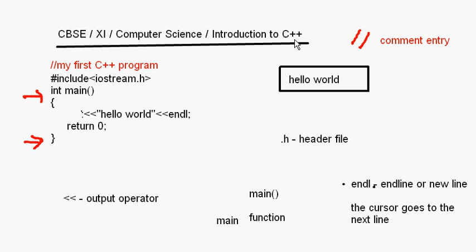After writing this program it will be compiled. C++ is a compiler-based language, so first the program is compiled and then it is executed. When the program is executed you get the output hello world. This was a short C++ program showing how a C++ program is to be written — what the main function is, what the header file is, and other basics. In our next video I'll take up more concepts of C++ and we'll write a program in which we take input from the user and produce some output.